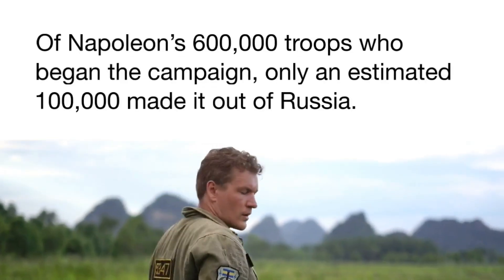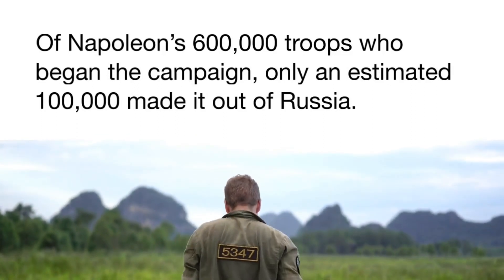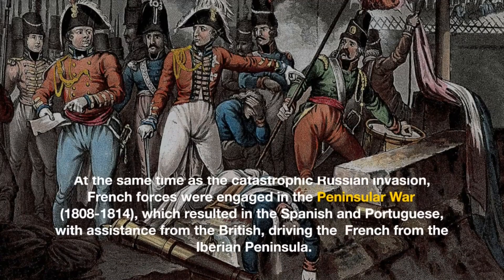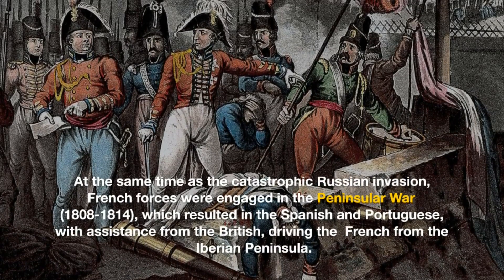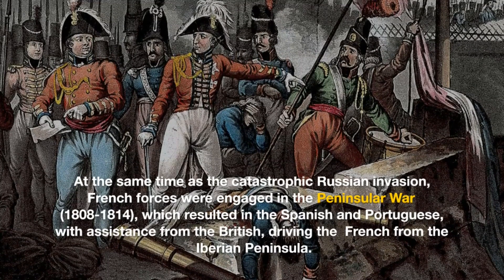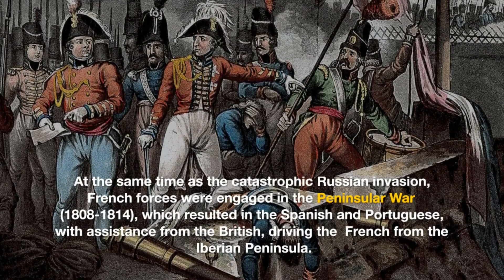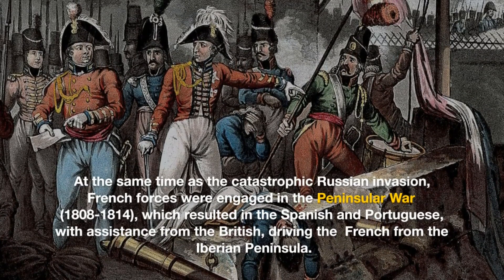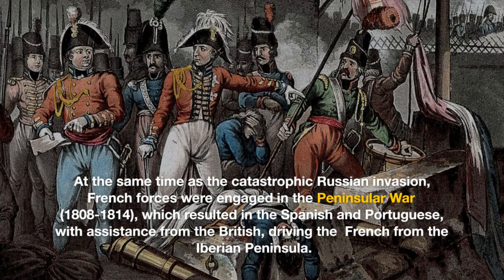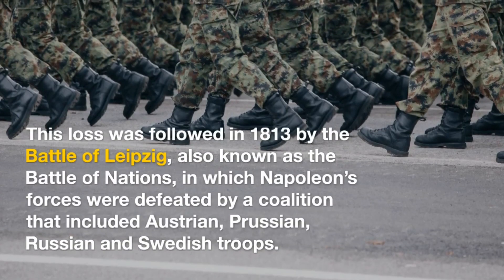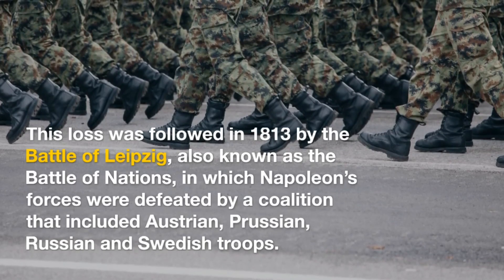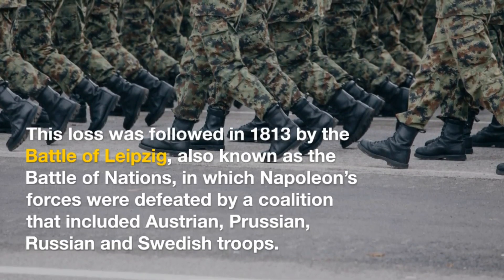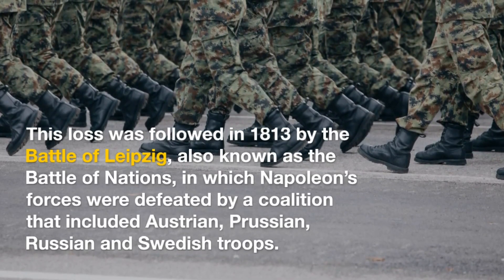Of Napoleon's 600,000 troops who began the campaign, only an estimated 100,000 made it out of Russia. At the same time as the catastrophic Russian invasion, French forces were engaged in the Peninsular War (1808–1814), which resulted in the Spanish and Portuguese, with assistance from the British, driving the French from the Iberian Peninsula. This loss was followed in 1813 by the Battle of Leipzig, also known as the Battle of Nations, in which Napoleon's forces were defeated by a coalition that included Austrian, Prussian, Russian, and Swedish troops.